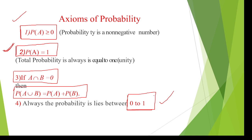The probability always lies between zero and one. One more axiom: if there is no common probability between A and B, then the joint probability to get A or B equals probability of A plus probability of B. Actually, probability of A intersection B is there, but here A intersection B equals zero. This is one more axiom. Thank you.